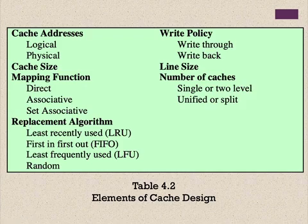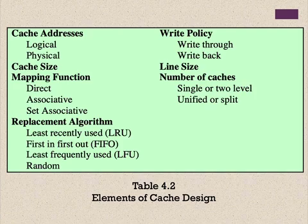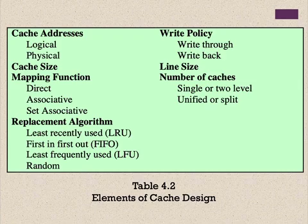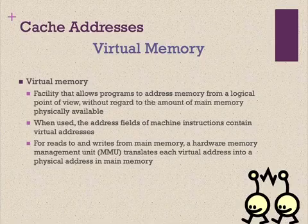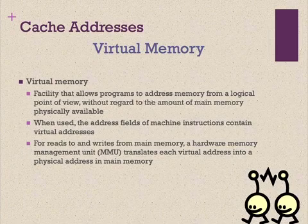Since cache is smaller than RAM, when there is no space to load new data a replacement algorithm is needed. Common algorithms include Least Recently Used (LRU), First In First Out (FIFO), Least Frequently Used (LFU), and random replacement. Write policy determines how updates are propagated — two common types are write-through and write-back. Other elements include line size and the number of cache levels — single, L1/L2, or L3 — and whether cache is unified or split into separate data and instruction caches.